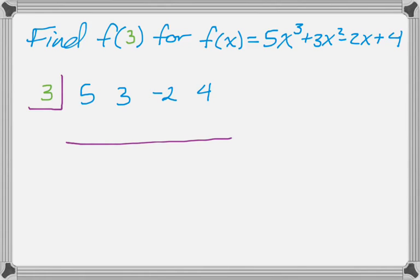So the process is the same every time, so I'm really just going to demonstrate it. First thing we do is drop down this 5. Now what I'm going to do is take 3 and 5 and multiply those to get 15. Then I add down, so I add down and I get 18.